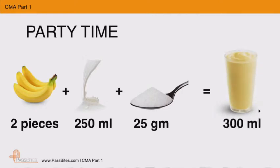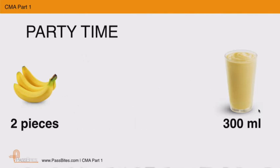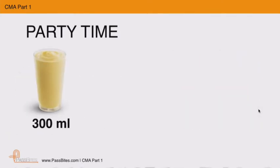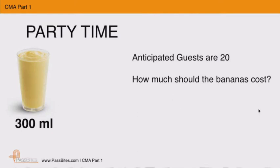To make the example simpler, I'm now focusing only on the bananas. So if two bananas are required to make 300 ml of banana milkshake, and one banana costs one dollar, how much should the bananas cost us if the anticipated guests are 20?